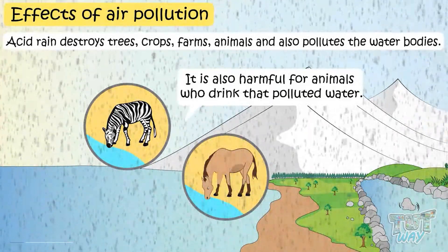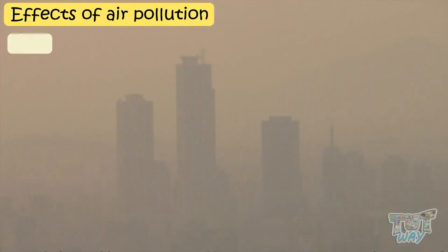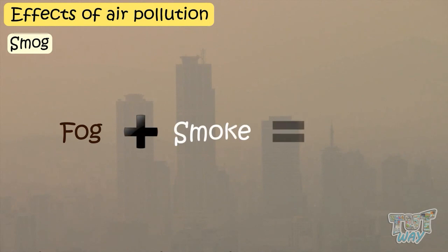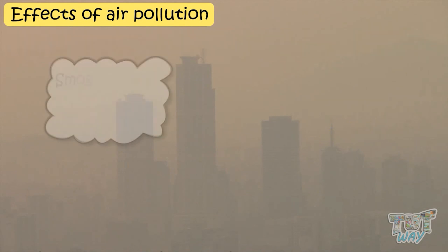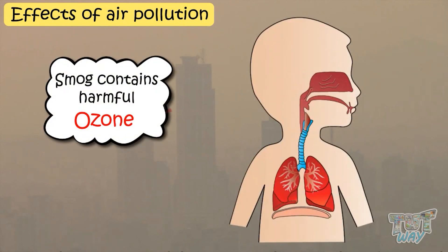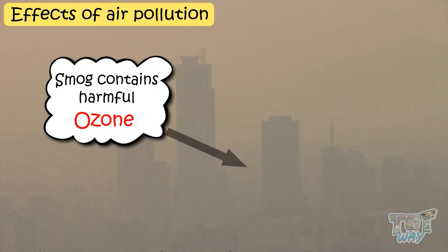Another important effect of pollution is smog. It is formed when fog is mixed with smoke, creating a poisonous form of fog which we call smog. It can be very harmful to breathe in too much smog, as it contains a pollutant called ozone — a gas that is very harmful for our lungs. Smog also reduces visibility.